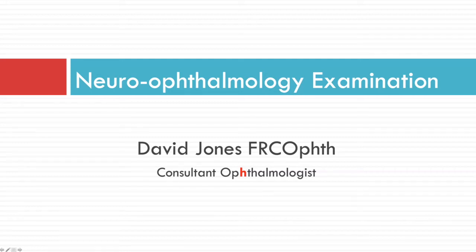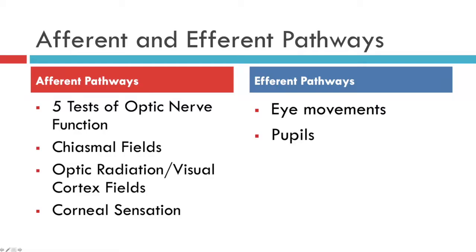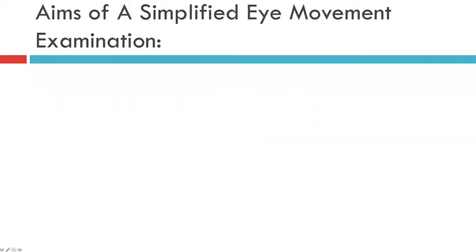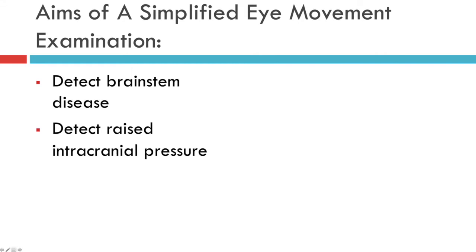The eyes provide a convenient and simple way of examining many aspects of the central nervous system, including afferent and efferent pathways. This video is about how to test eye movements in a simplified fashion. The examination of eye movements can be very complex and occupies most of the careers of orthoptists, neurologists and ophthalmologists, but a simplified eye movement examination will help you detect many aspects of brain stem disease, raised intracranial pressure, and diffuse brain insult in three easy moves.